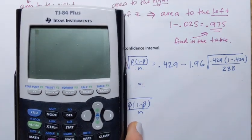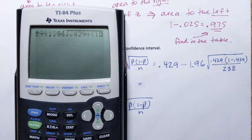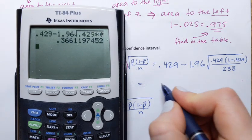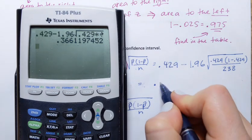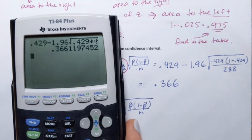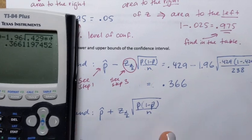Entering the full expression into the calculator — 0.429 minus 1.96 times the square root of 0.429 times (1 minus 0.429) divided by 238 — I get 0.366 rounded to three decimal places. That is the lower bound of the interval.